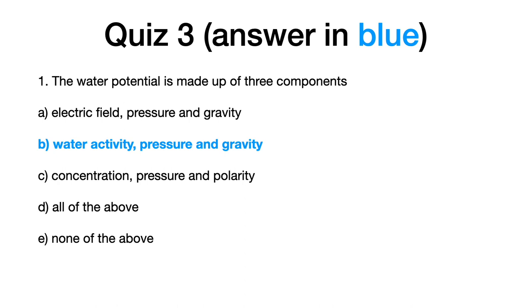Quiz number three, the answers are in blue bold color. Number one, the water potential is made up of three components. The correct answer is B, water activity, pressure, and gravity.